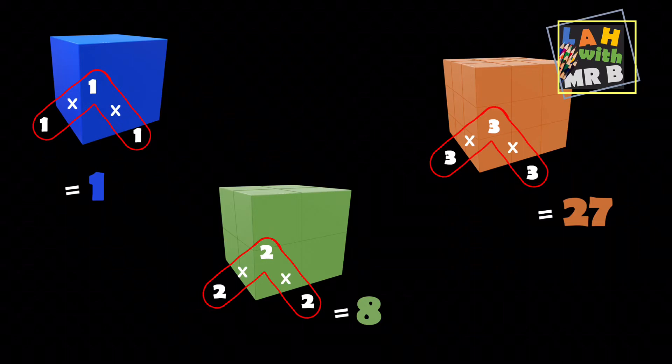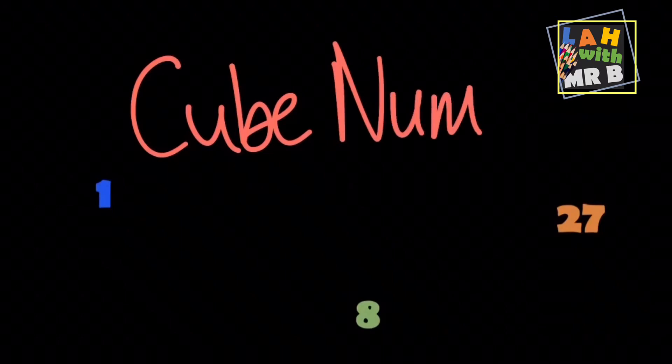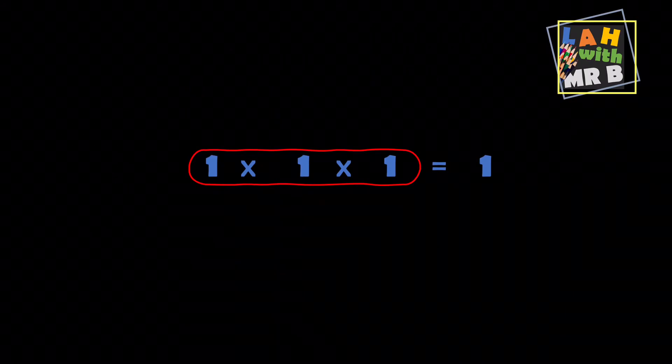You can see how saying cubed actually saves us a bit of time. Instead of repeating ourselves saying three times three times three, we can just say three cubed. So these are the first three cubed numbers: one, eight, and 27. And that's really all the cubed numbers are. You can see that a cube number is just a number multiplied by itself three times.